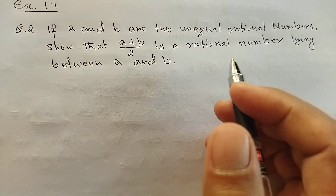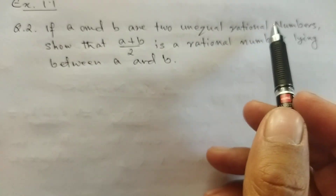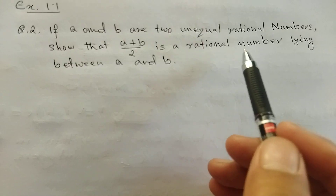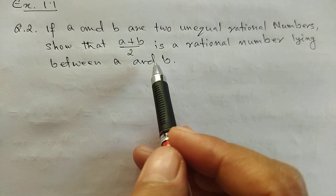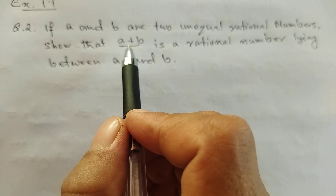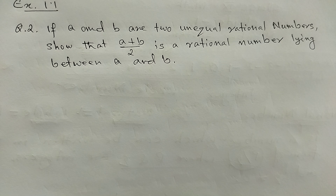Exercise 1.1, question number 2: if a and b are two unequal rational numbers, show that (a+b) divided by 2 is a rational number lying between a and b.